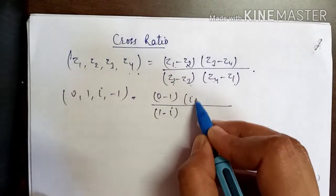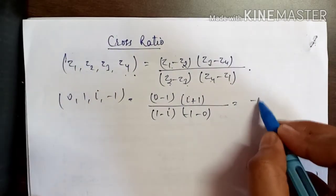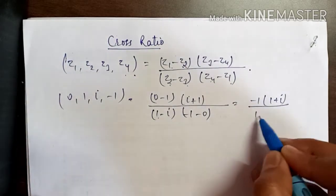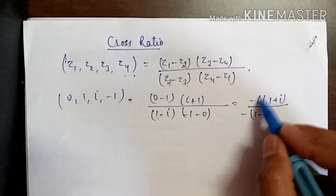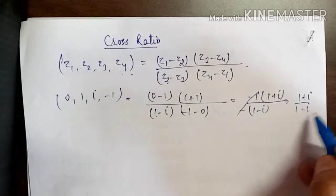So iota plus 1, then minus 1 minus 0. What is minus 1 into 1 plus iota divided by 1 minus iota into minus 1? This value, minus minus cancels, 1 plus iota by 1 minus iota.